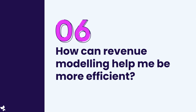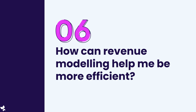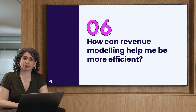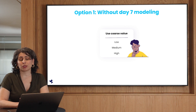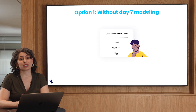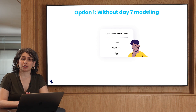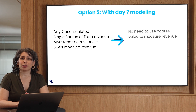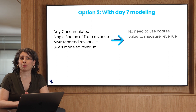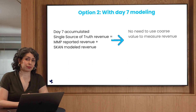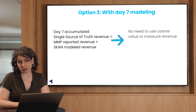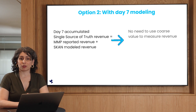Question 6: how can revenue modeling help you be more efficient? We have two options. Option 1: you're not using day 7 modeling and you're looking at revenue — then you'll need to dedicate the 1st and 2nd postback coarse values to measure revenue, and you can receive day 7 revenue up to 13 days post-install. In option 2, you're using day 7 modeling and a single source of truth solution to eliminate duplications from SKAN and MMP revenue, so that you can get revenue metrics after 7 days instead of up to 13. You'll be able to measure revenue with the fine-grained conversion value, while using coarse values to measure events and retention.